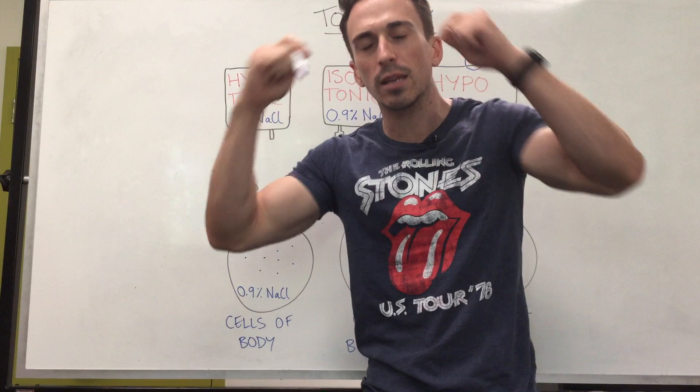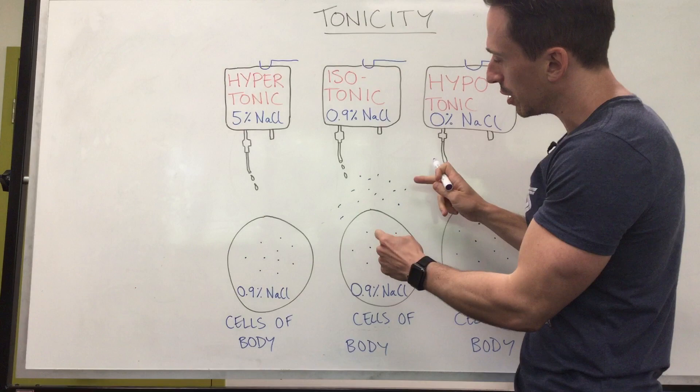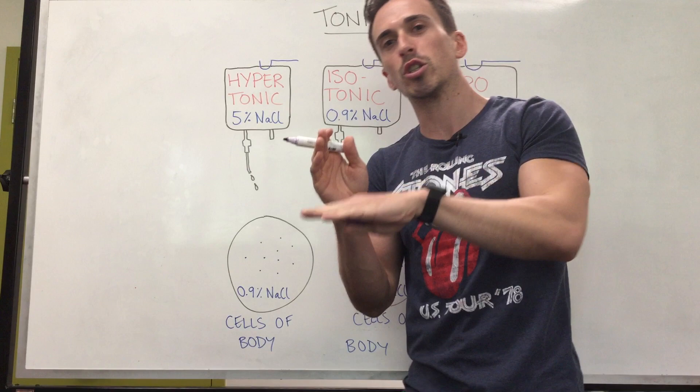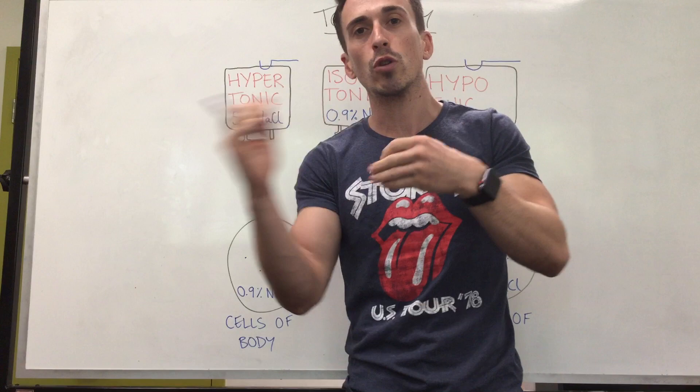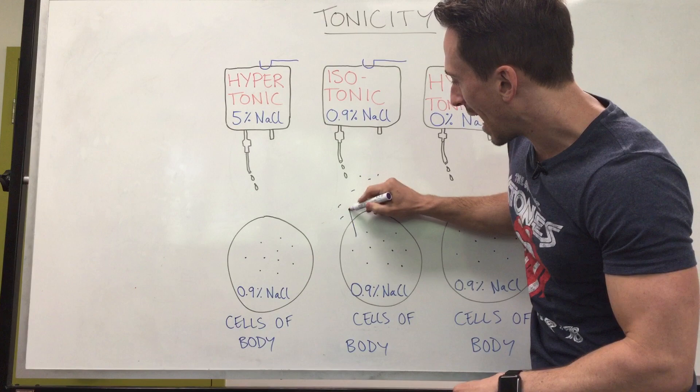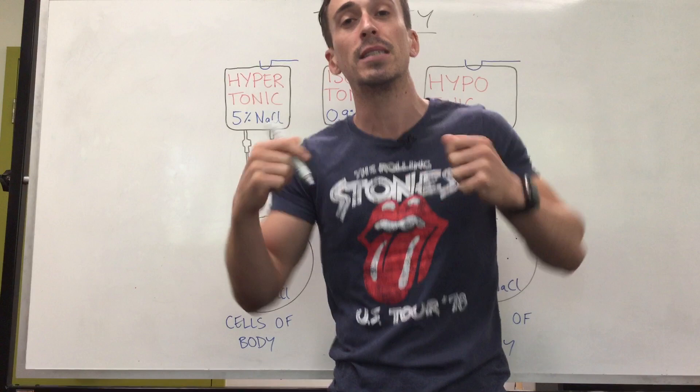Now you need to think about diffusion and osmosis. If the concentration of solutes outside the cell is equivalent to that inside the cell, solutes want to move down a concentration gradient to balance out — but there's no concentration gradient, so no solutes move. With osmosis, water moves down its concentration gradient, but because there's no gradient, whatever water moves out of the cell is equivalent to the water moving in and no net change happens. This is what happens when you introduce an isotonic solution.